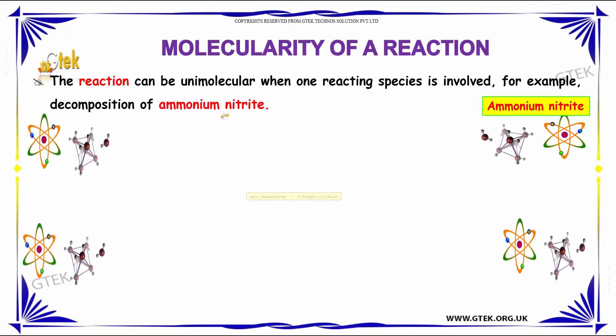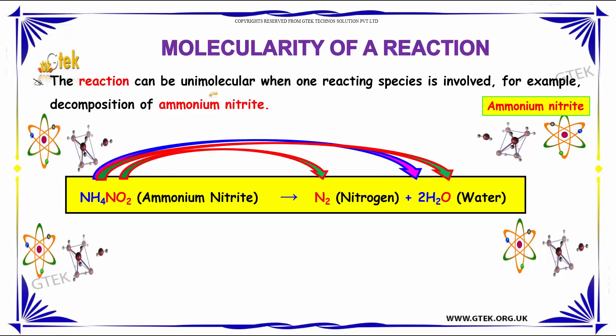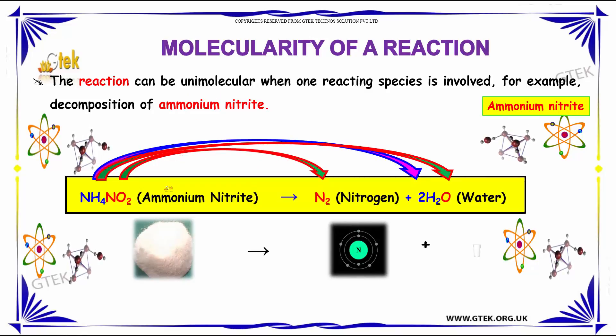The reaction can be unimolecular when one reacting species is involved, for example ammonium nitrite. It decomposes to give nitrogen and water.